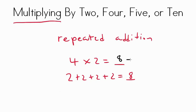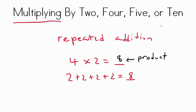This answer with multiplication is called the product. So the product of 4 times 2 is 8. The same thing goes for when you're multiplying by 4s, by 5s, or by 10s — you're repeating it over and over the same number.